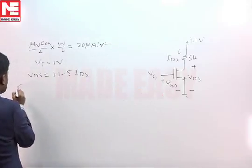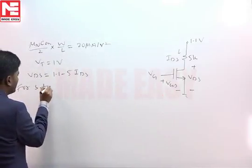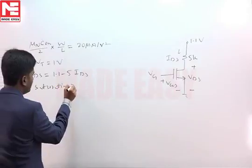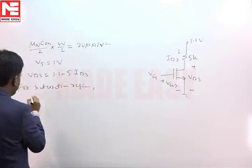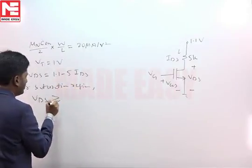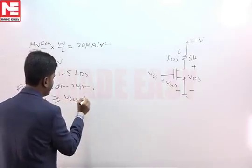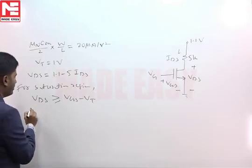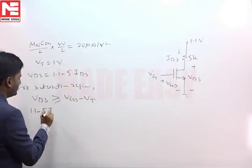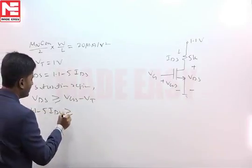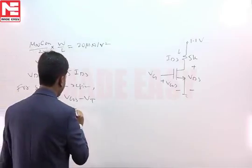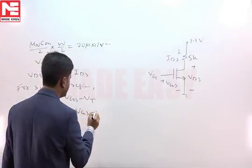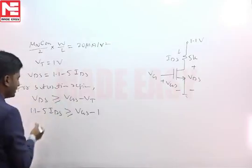For saturation region, VDS should be greater than or equal to VGS minus VT. That VDS is 1.1 minus 5 IDS and that should be greater than or equal to VGS minus VT. VT is 1 volt as given in the question.